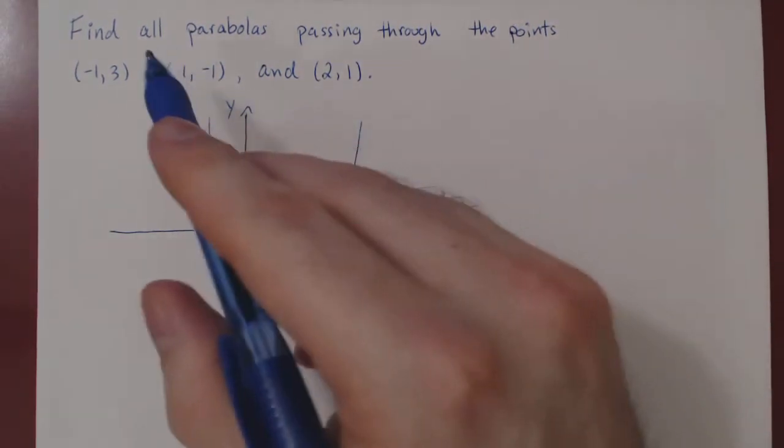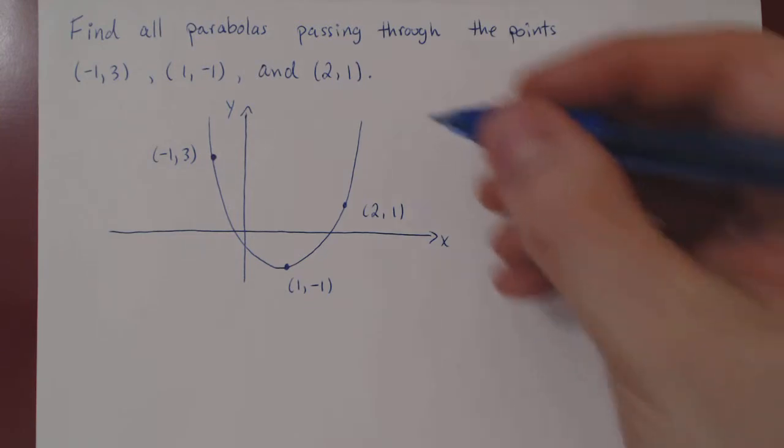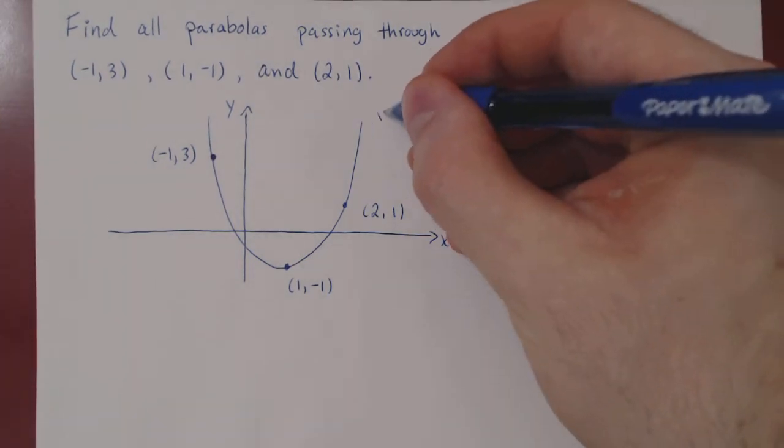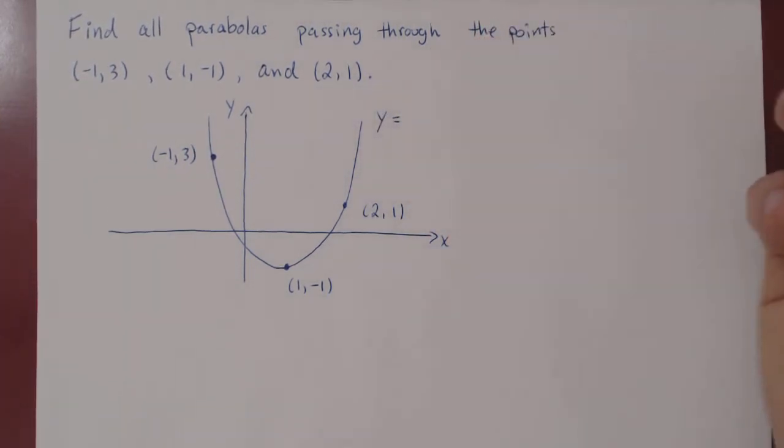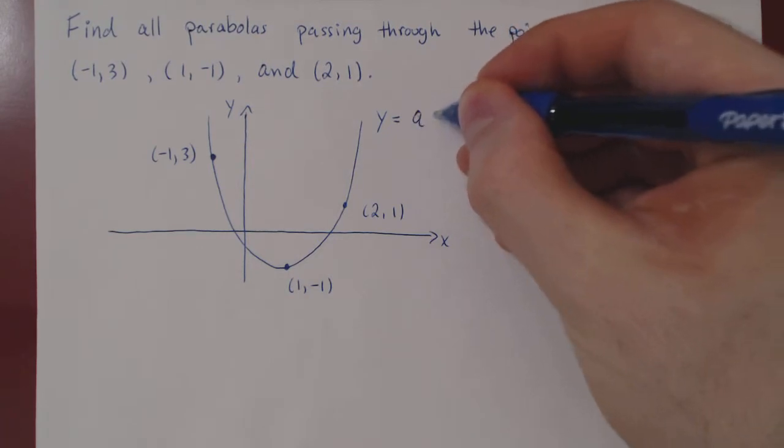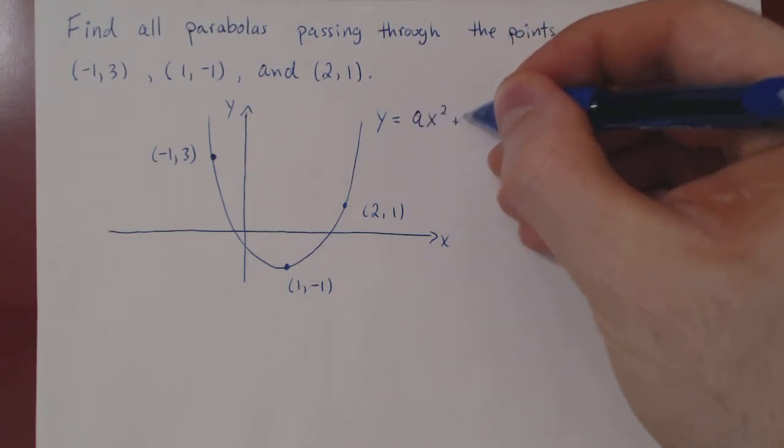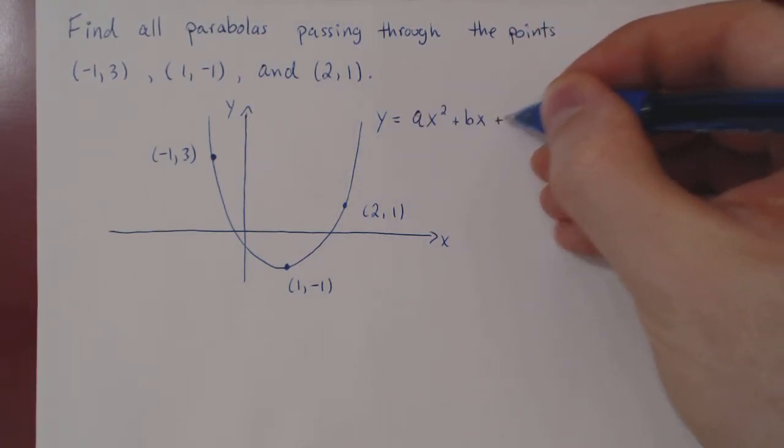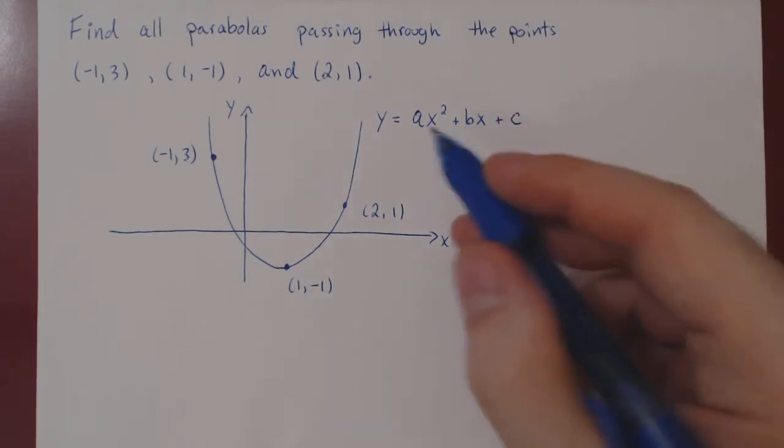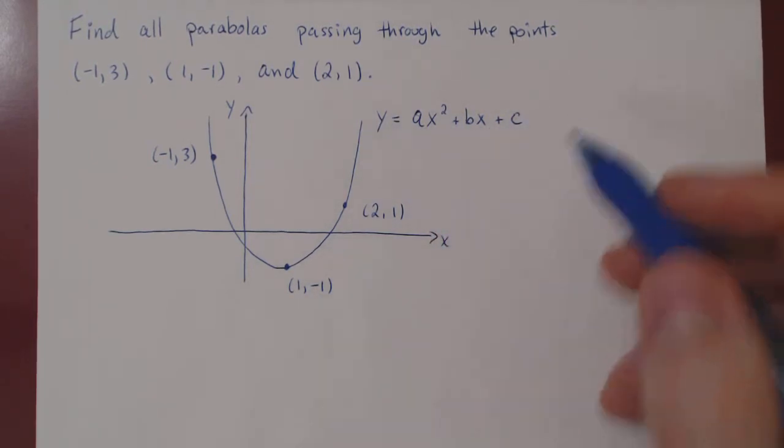Okay, well, if we want to find the parabolas, we have to find the equations. Well, if you remember, a parabola is simply a quadratic polynomial. So it must be of the form some multiple of x squared, plus some multiple of x, plus some constant term. So y equals ax squared plus bx plus c.